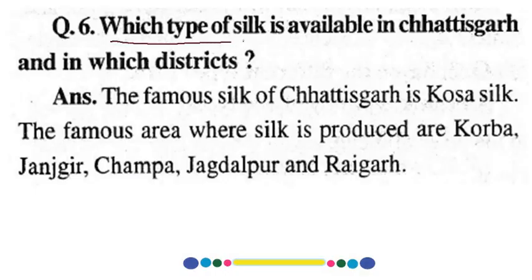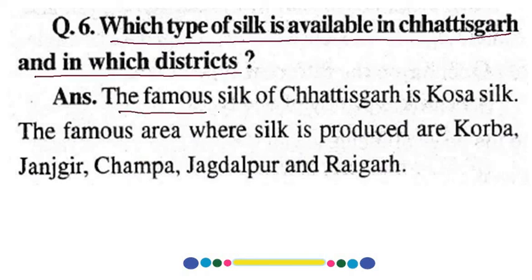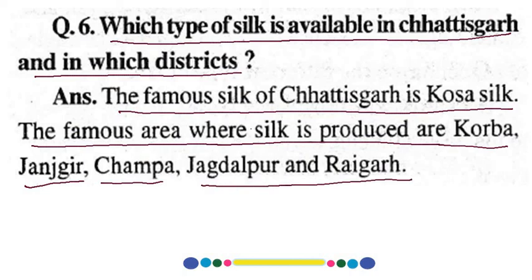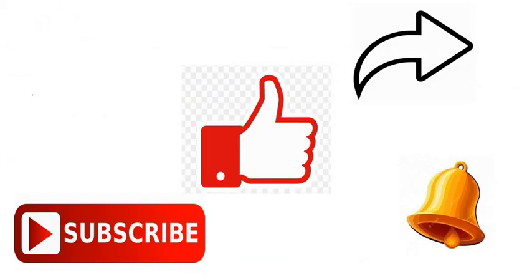Which type of silk is available in 36 ghar and in which district? Dhaktama silk of 36 ghar is osa silk. It is produced in Purba, Janagir Champa, Janagalpur, and Raigarh districts. Your lesson ends here.